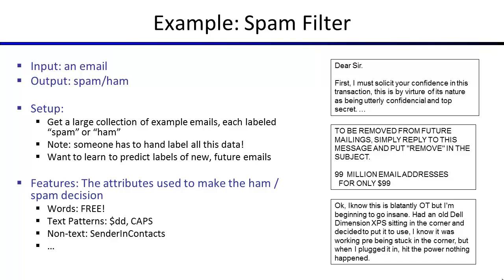You want to learn to predict new labels on future emails, not just the ones you have. Nobody presents you with an exhaustive list of every email that will ever be received. The problem is you're getting all kinds of new emails, and you need to make decisions on the new emails on the basis of the old emails. There's going to have to be something that connects them — that's going to be what are called features.